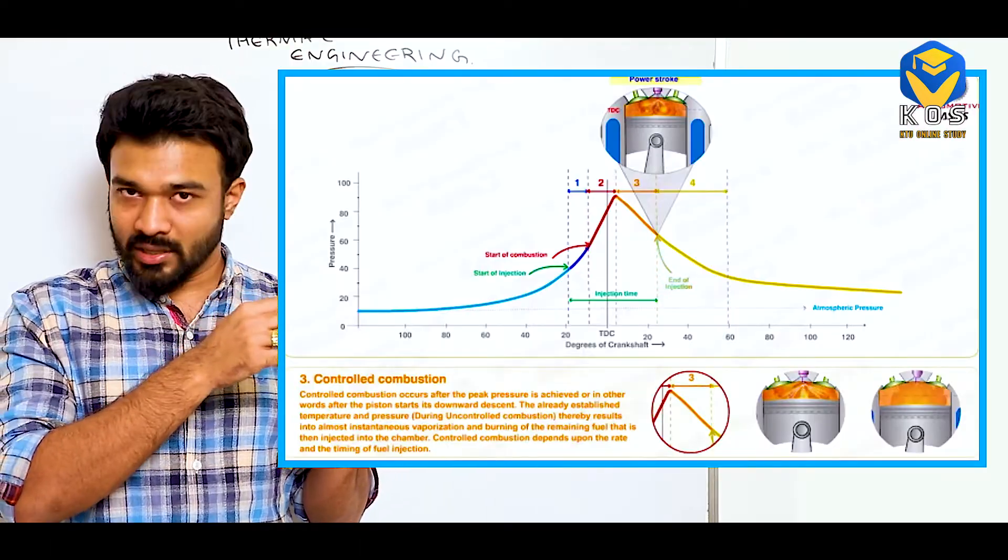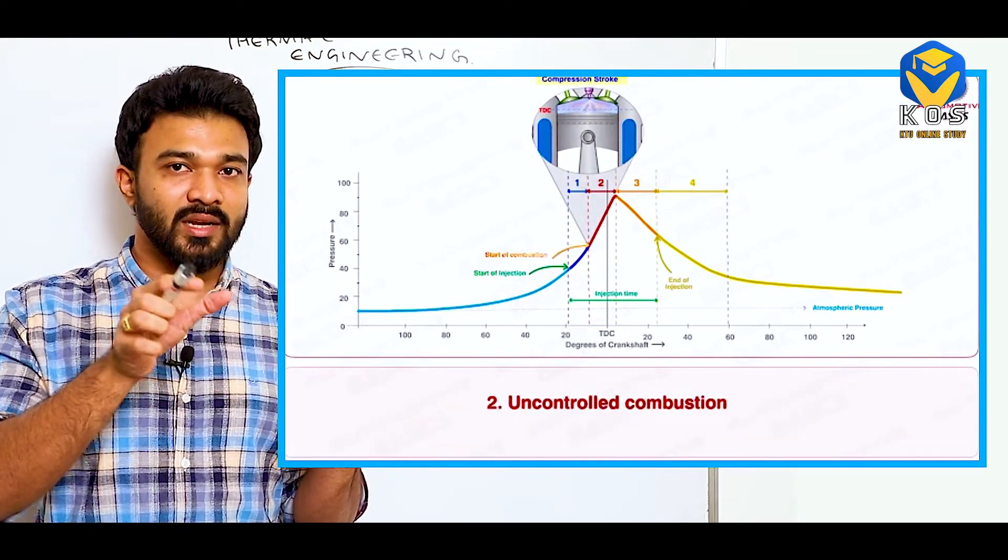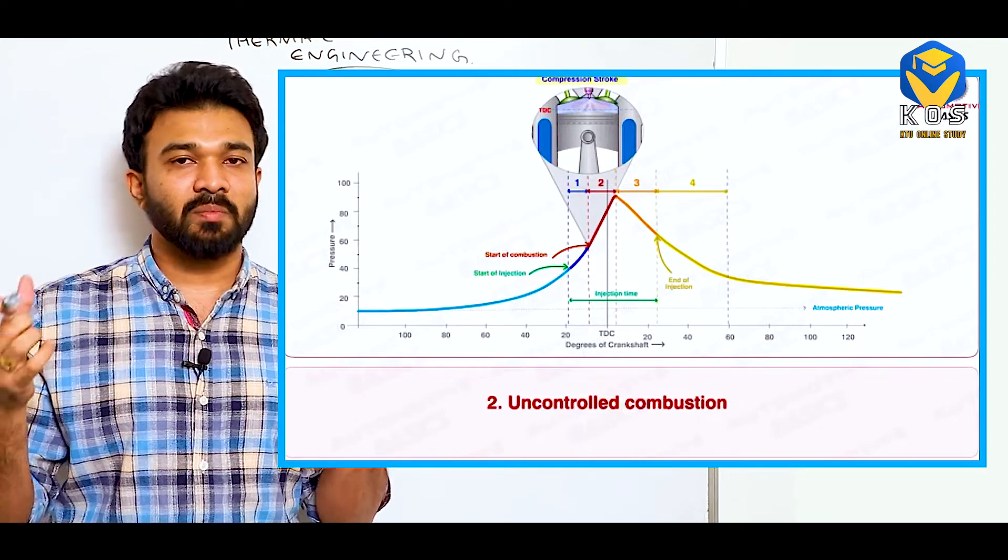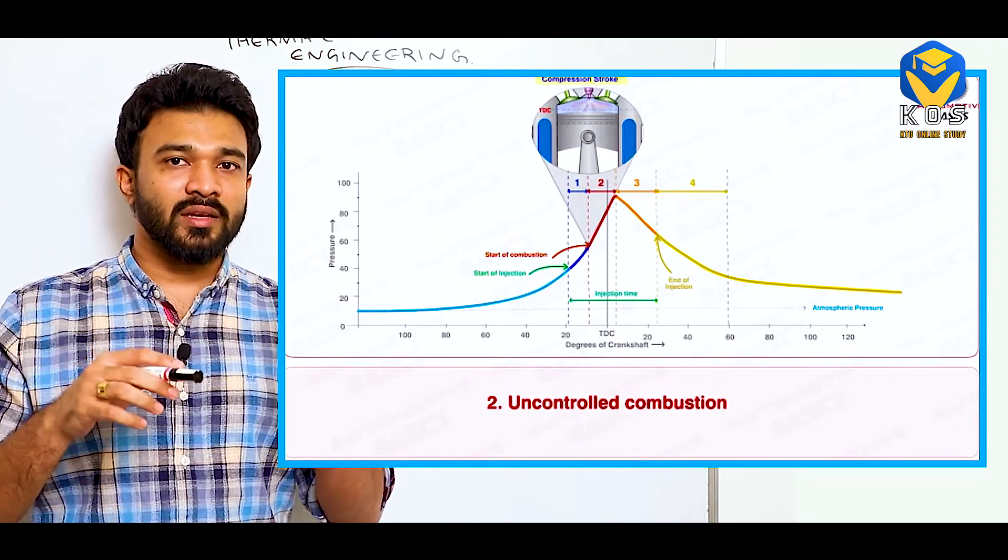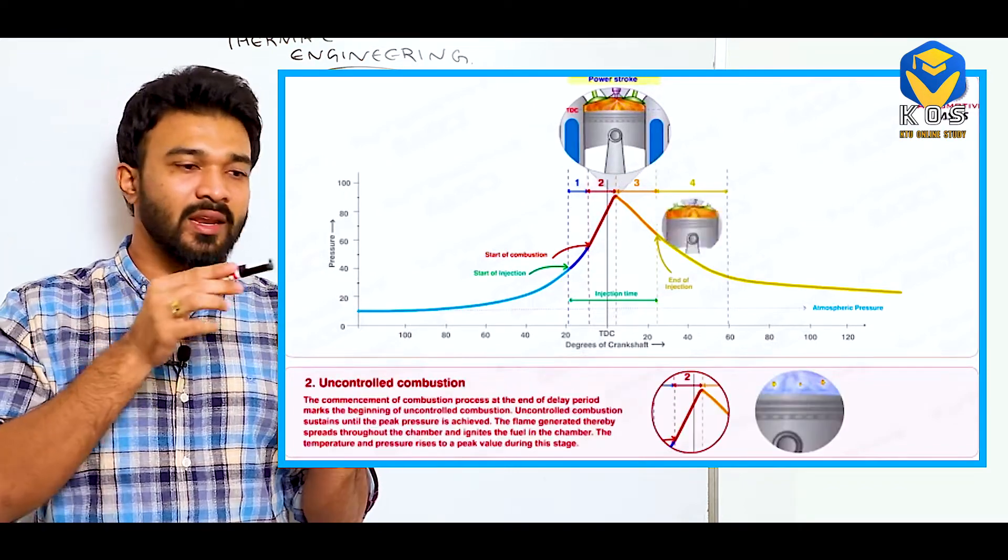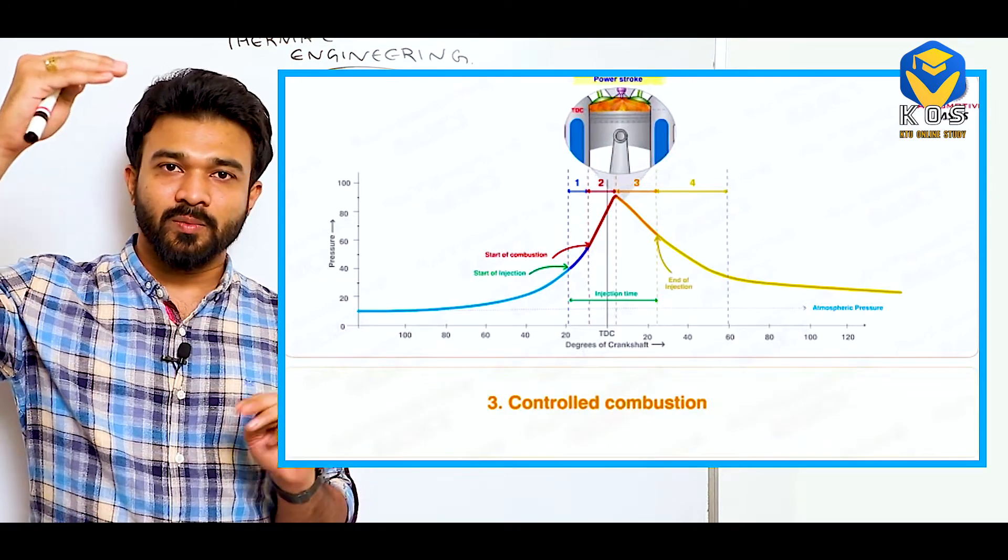First is the delay period and second is the uncontrolled combustion region. Then there is a sudden explosion and there is a huge pressure on it. And then when we travel to the TDC, then we have controlled combustion. That is the point of the piston at top peak point.